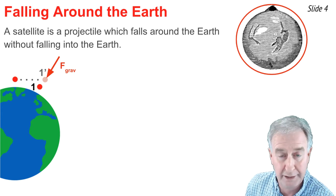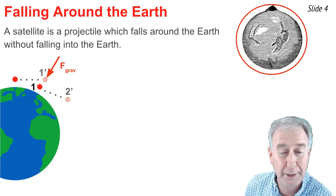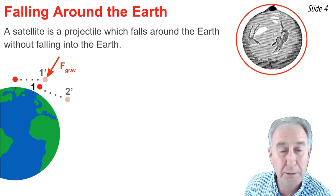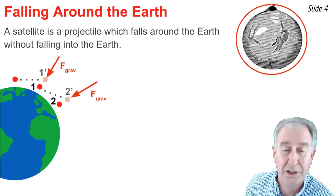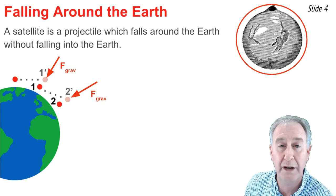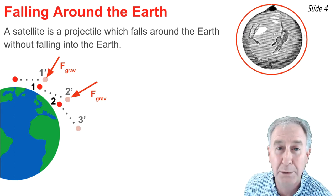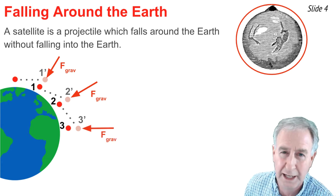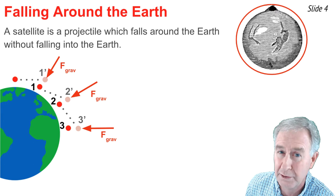Some time later, this projectile, in the absence of gravity, would be located at position 2 prime. But because of the influence of gravity, pulling it downwards, it's located at position 2 instead. Again, traveling tangent to the circular path. And because of that, some time later, in the absence of gravity, it would be located at position 3 prime. But again, gravity pulls it downwards, and it's located at position 3 instead, traveling tangent to the circular path.